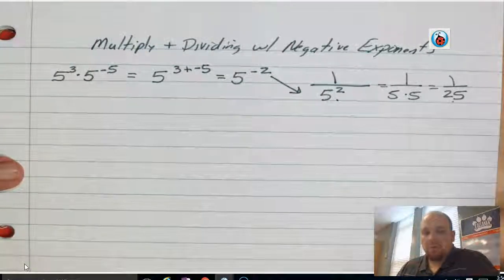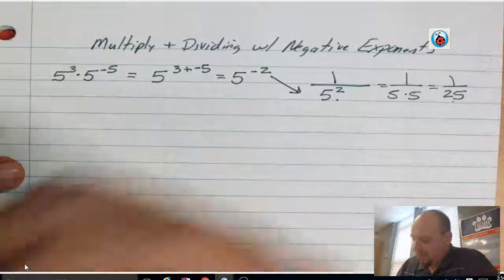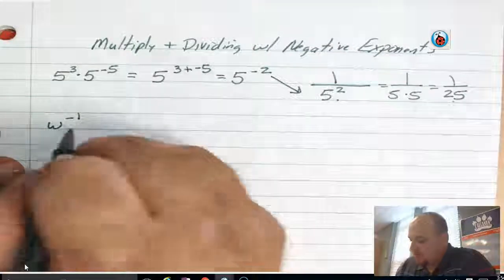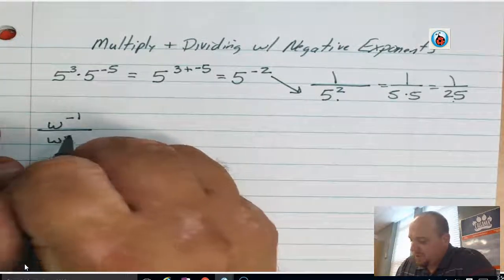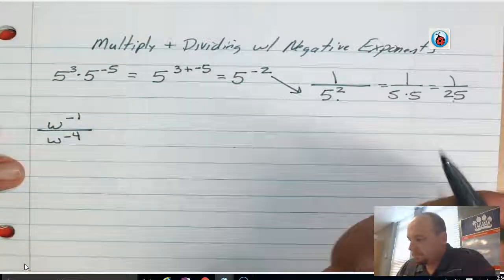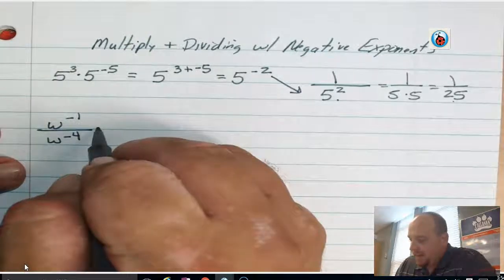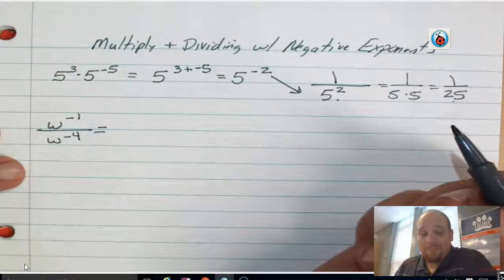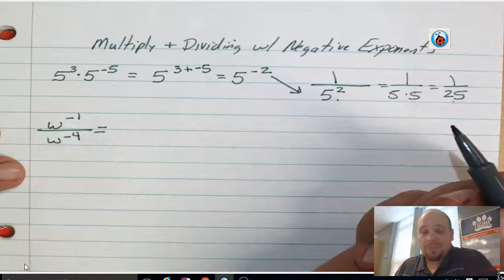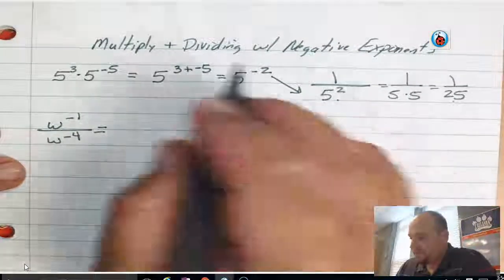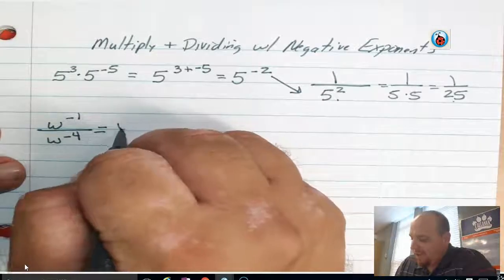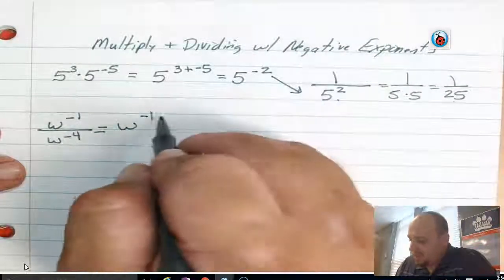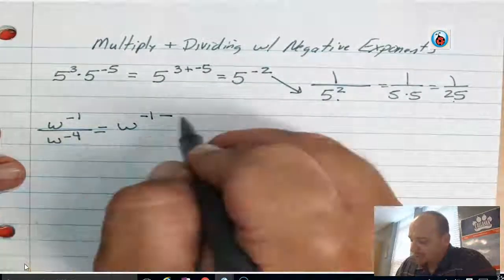Let me show you one with division. Think back to what you learned in division. So I've got w to the negative 1 over w to the negative 4. When I'm dividing by powers, by bases with the same base, what do I do? Remember, I write the base w, I write the top power, negative 1, and I'm going to subtract the bottom power, which is negative 4.